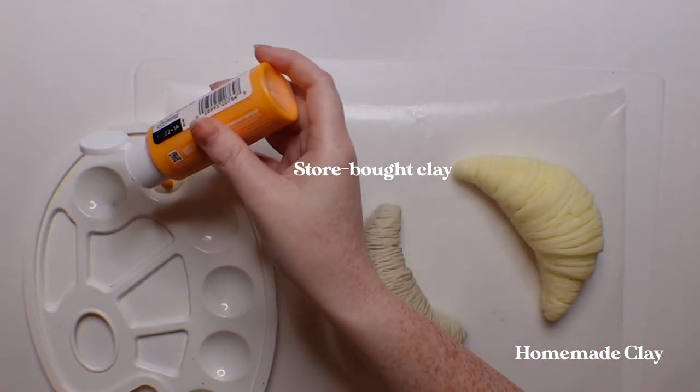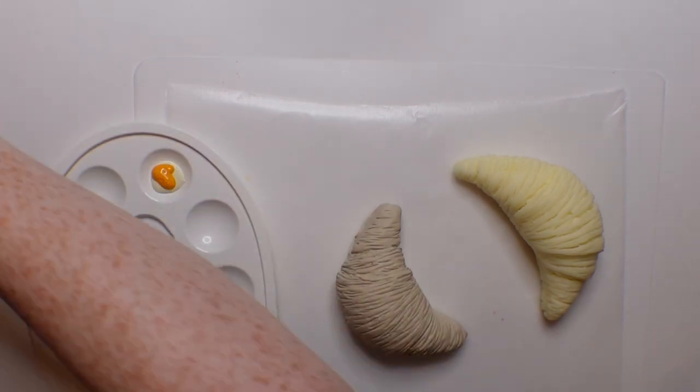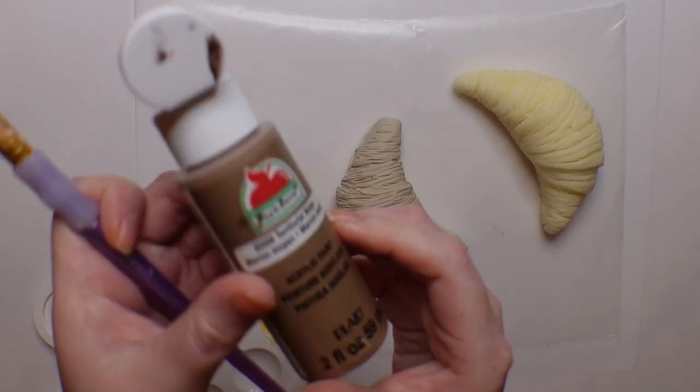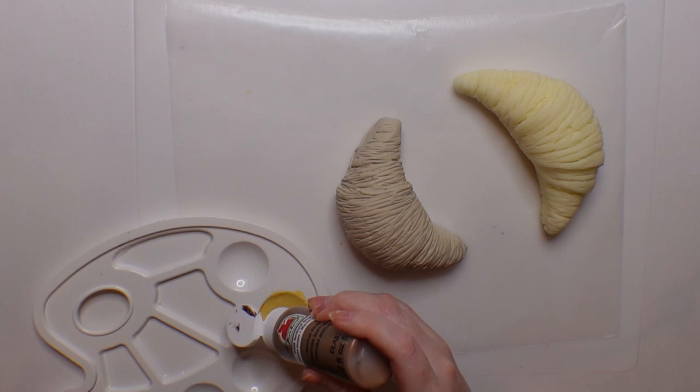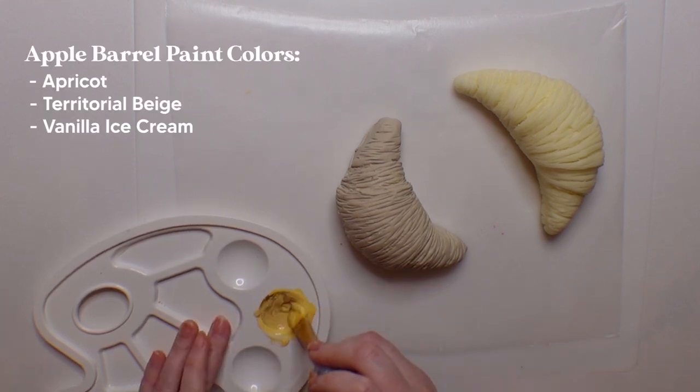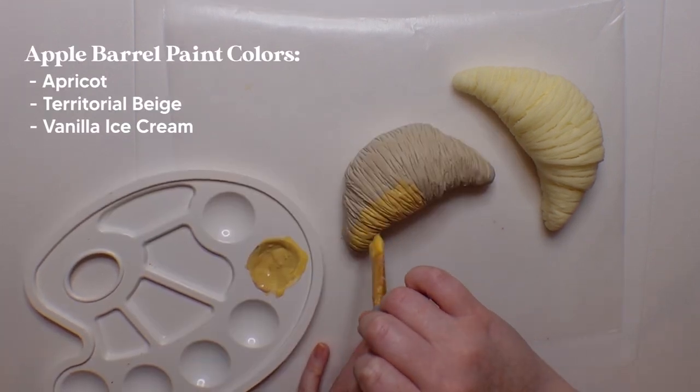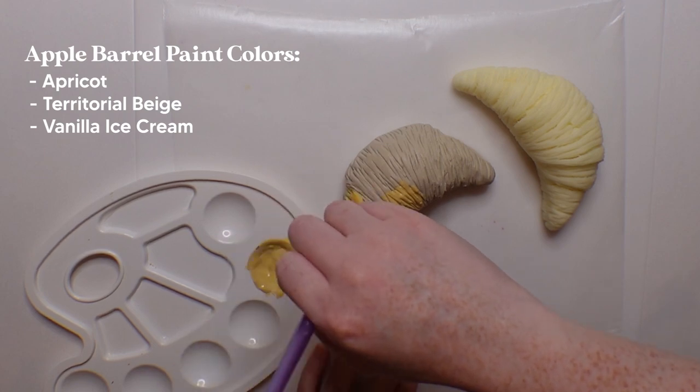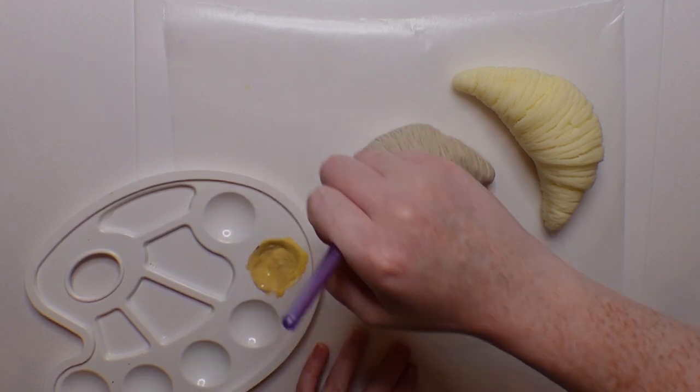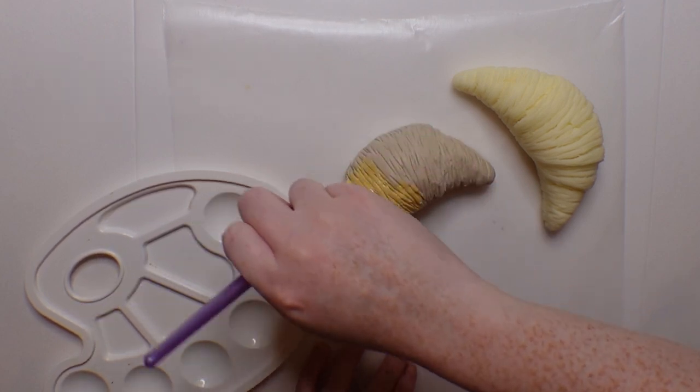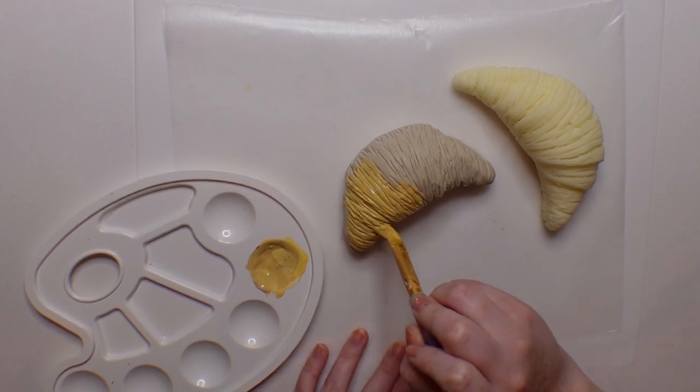Then I mixed up sort of a burnt yellow color. The colors I used for this were Vanilla Ice Cream, Apricot, and Territorial Beige, all from Apple Barrel. I put that on as a first coat over both of them, and this will be the overarching color of the croissant. But then we're going to put another layer over top to give it more dimension.